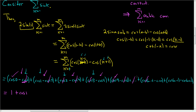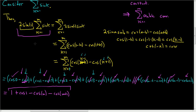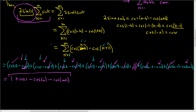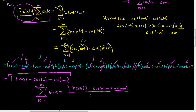All of the middle terms go away. The only things we're left with are the first and last. So 2 sin(1) times the finite sum of sin(k) equals 1 + cos(1) − cos(M) − cos(M + 1). Dividing everything by 2 sin(1), the finite sum as k runs from 1 to m of sin(k) equals [1 + cos(1) − cos(M) − cos(M + 1)] / (2 sin(1)).